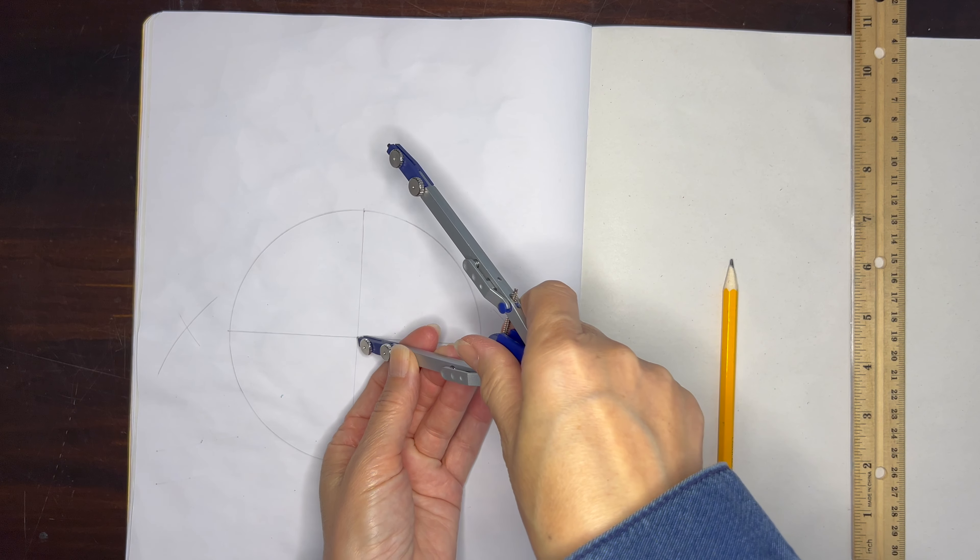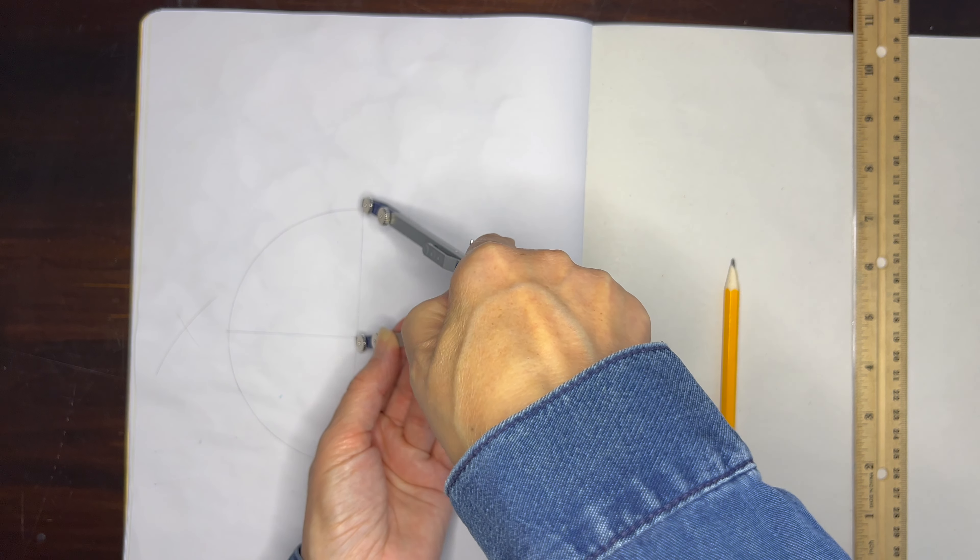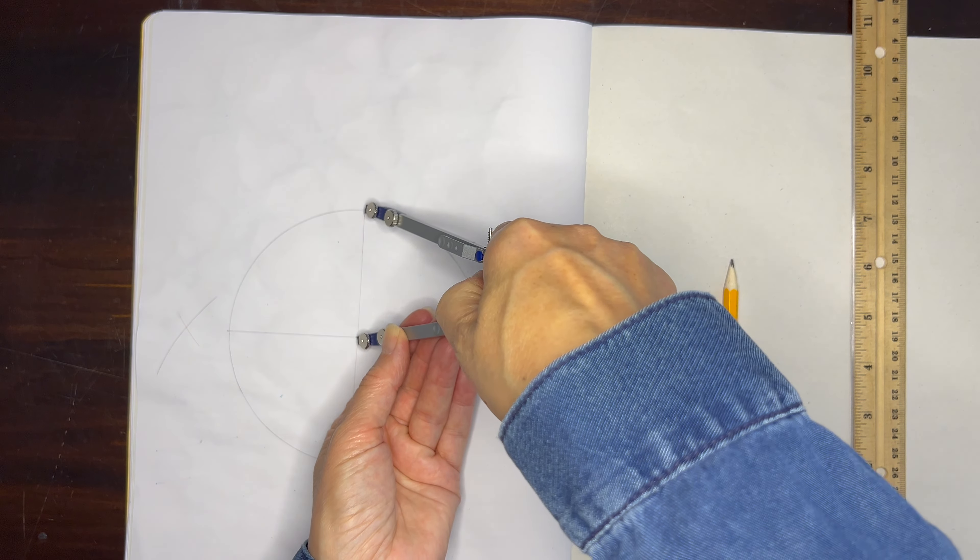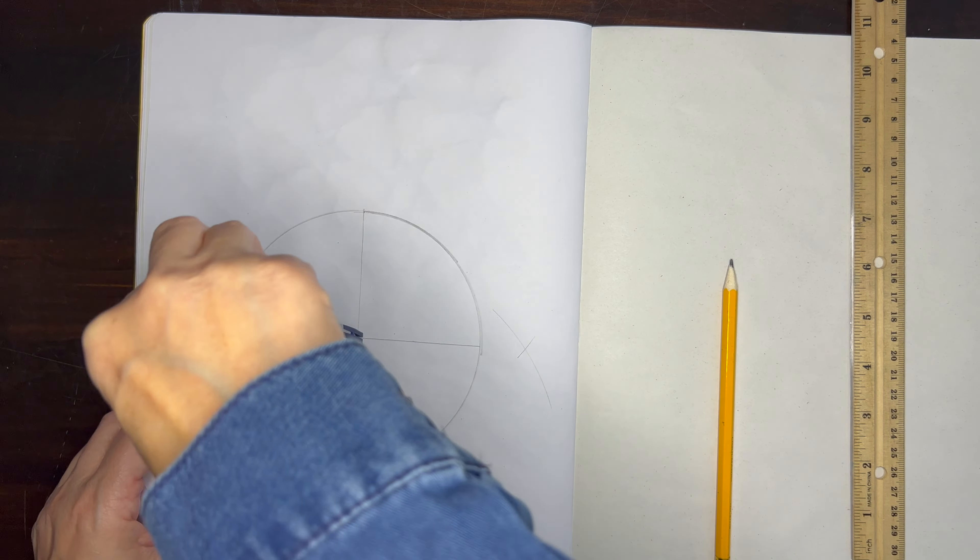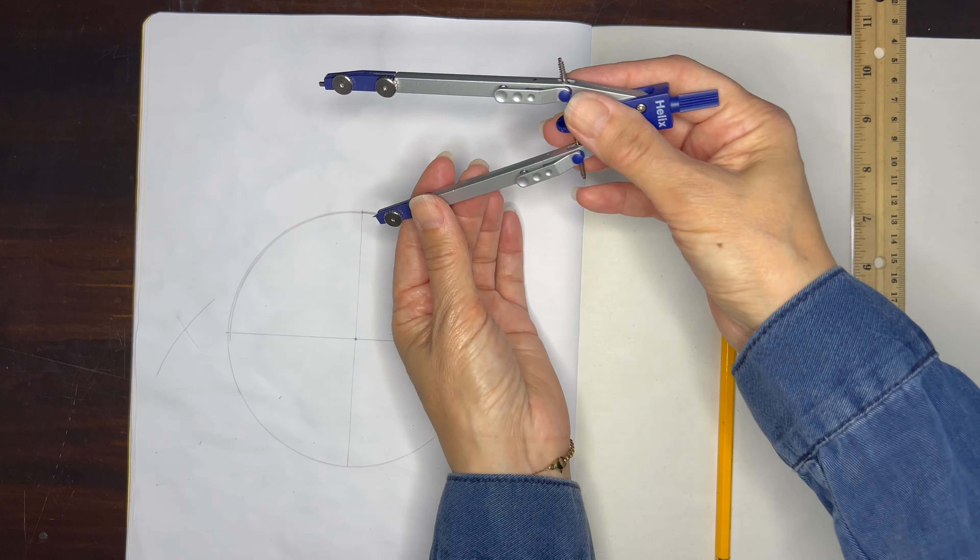So we've now completed four division of a circle, but we actually want to do five. So we want to reposition our compass to the original radius and I'm going to double check to make sure that it is accurate, but I do need to do a little bit of fine tuning to make sure that it is the original radius.